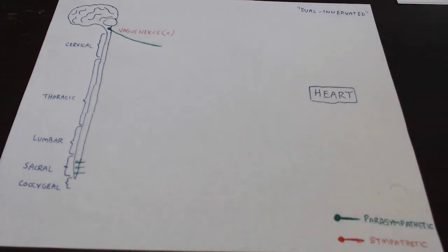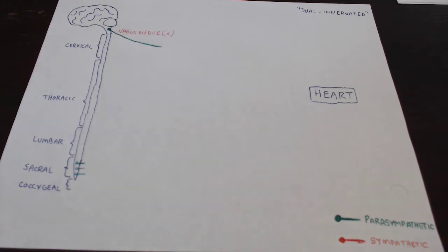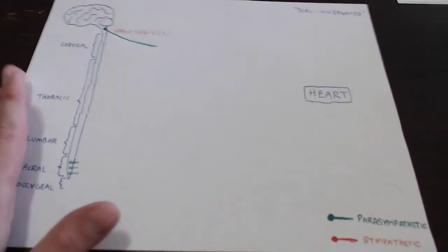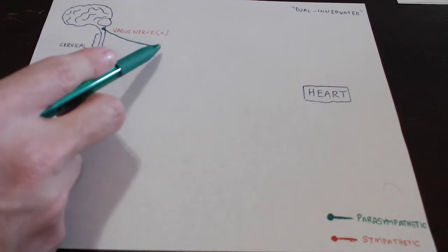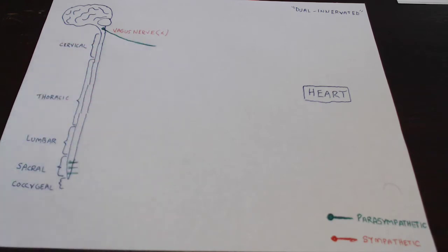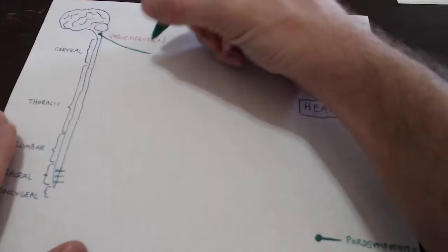Moving right along, we've got our vagus nerve carrying the axon of this parasympathetic motor neuron. You might expect that since our target is the heart, this axon is going to go all the way to the heart and directly release neurotransmitter onto it so that we can modulate the function of the heart in some way. Well, that's not exactly true.